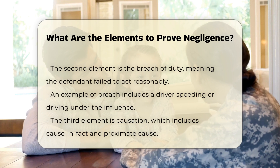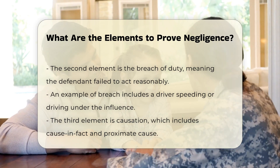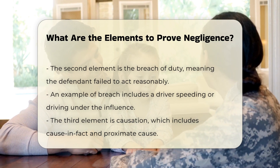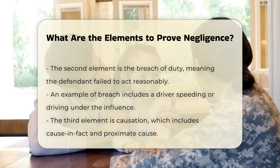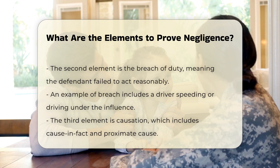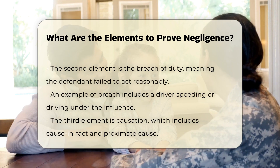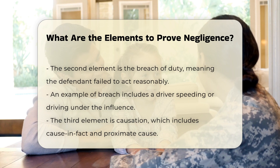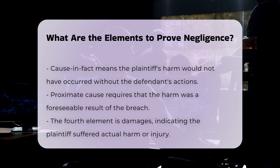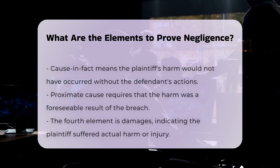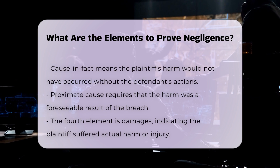Causation. The third element involves causation, which has two components: cause in fact and proximate cause. Cause in fact means that the plaintiff's harm would not have occurred but for the defendant's conduct. Proximate cause requires that the defendant's breach of duty was the direct cause of the harm and that the harm was foreseeable. This means the defendant should have anticipated that their actions could result in the type of injury the plaintiff suffered.